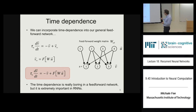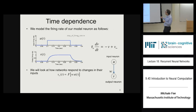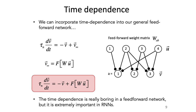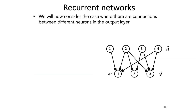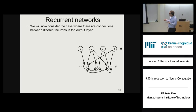I forgot to include the recurrent connections. In a feedforward network, the time dependence is very simple — the dynamics just look like simple exponential relaxation. But in a recurrent network, this can get really interesting. Let's add the recurrent connections to our equation now.